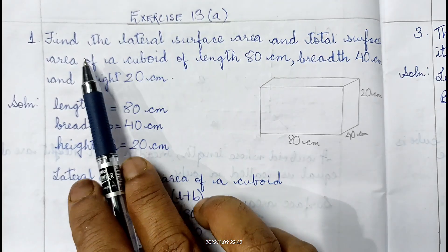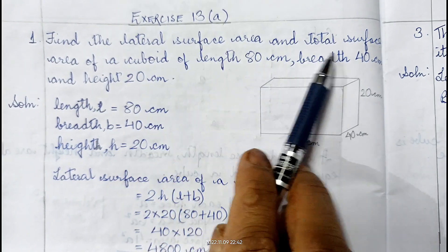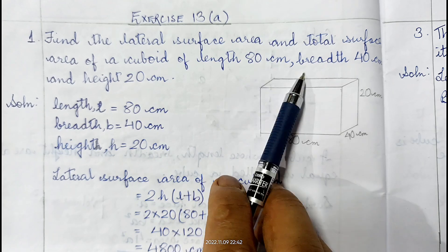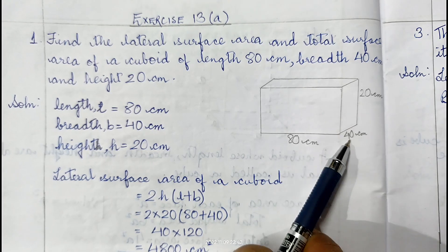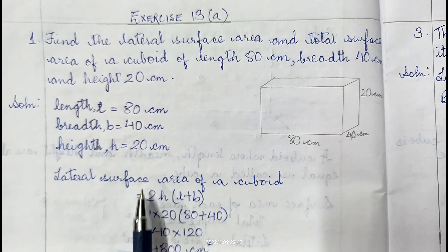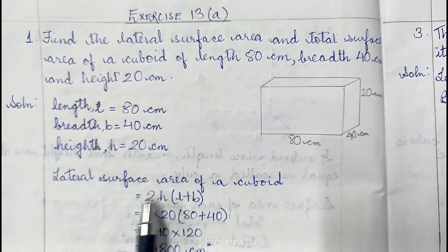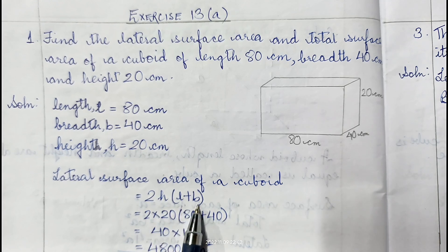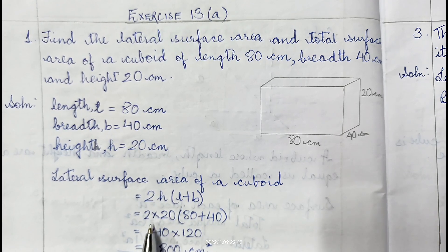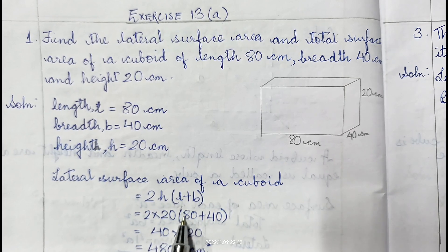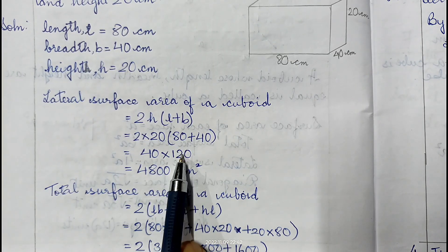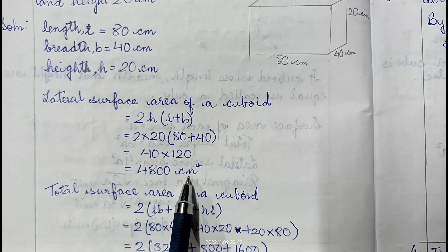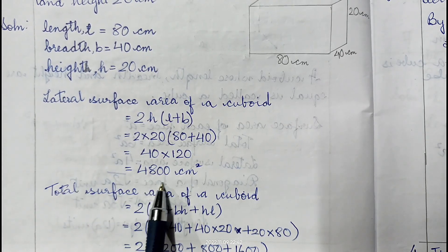Question 1: Find the lateral surface area and total surface area of a cuboid of length 80 cm, breadth 40 cm, and height 20 cm. Lateral surface area = 2H(L + B) = 2 × 20 × (80 + 40) = 40 × 120 = 4800 cm². So the lateral surface area of the cuboid is 4800 cm².